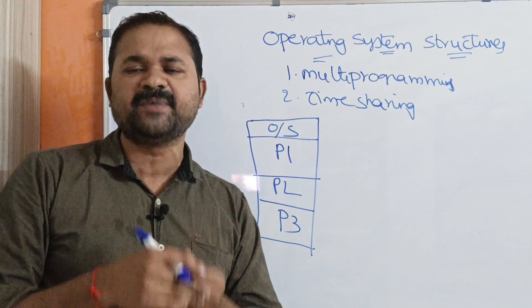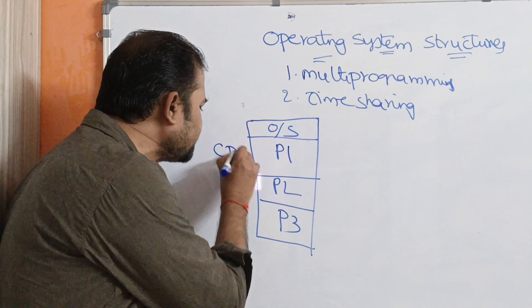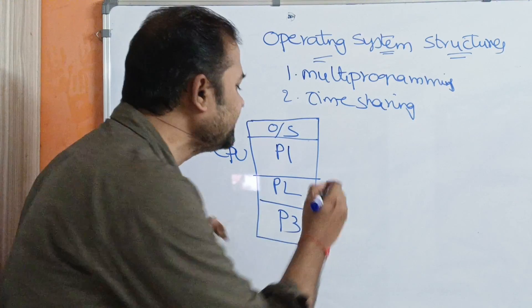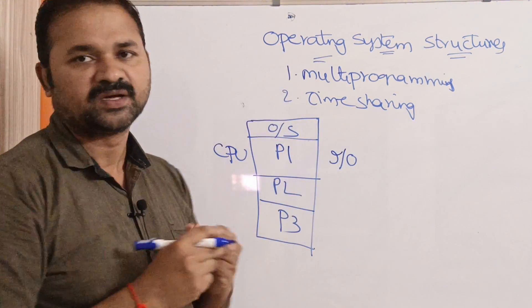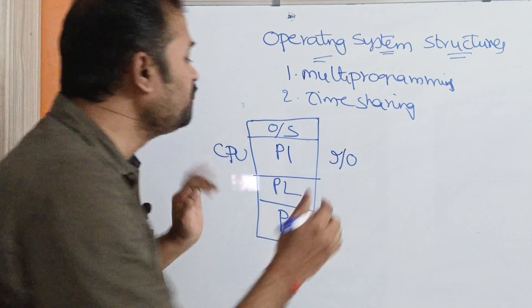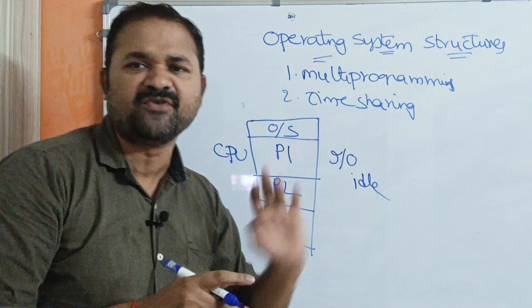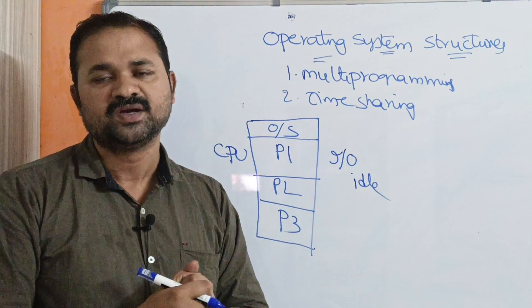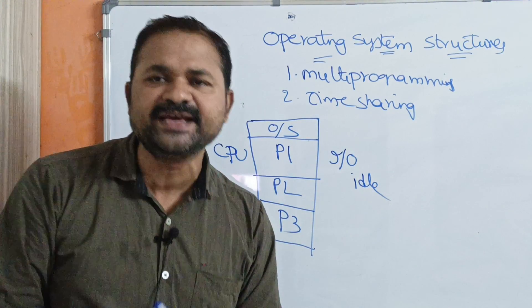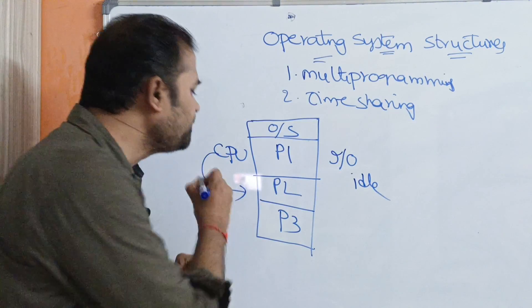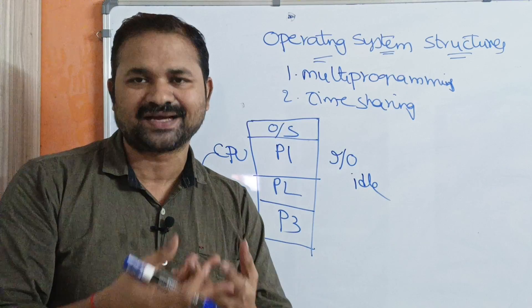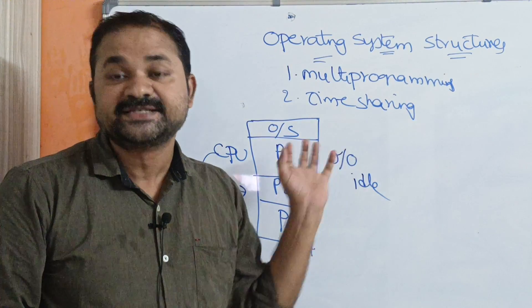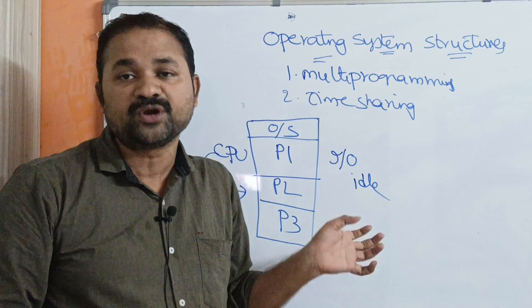So now we have three programs P1, P2, P3 in the main memory. Let the CPU be executing P1. Assume that P1 needs an I/O operation. During that time, CPU will be idle, because P1 needs some I/O operation and that requires some activities. So the operating system will allocate the CPU to some other process. A process means a program during execution, so now we can call them as processes.